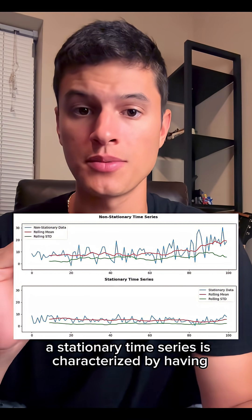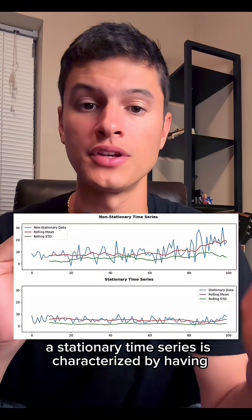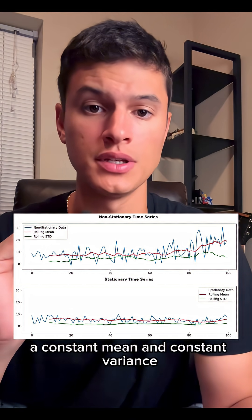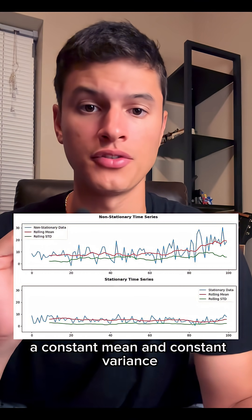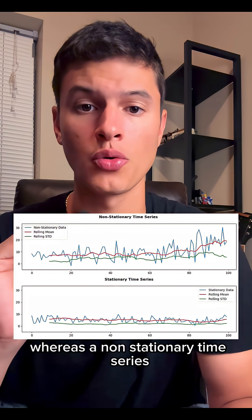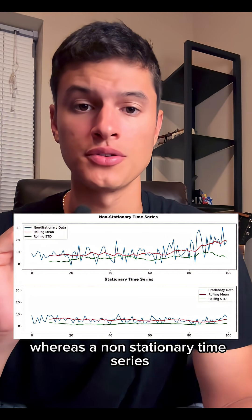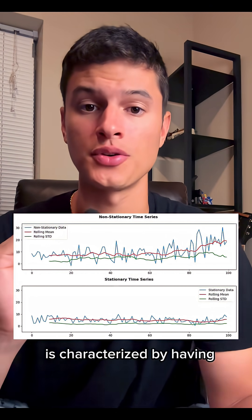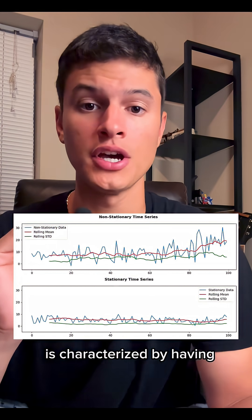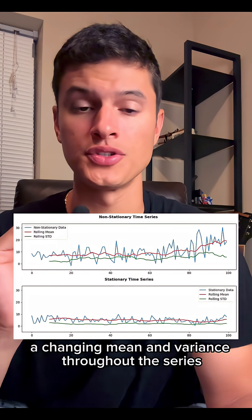Stationary time series is characterized by having a constant mean and constant variance throughout the series, whereas a non-stationary time series is characterized by having a changing mean and variance throughout the series.